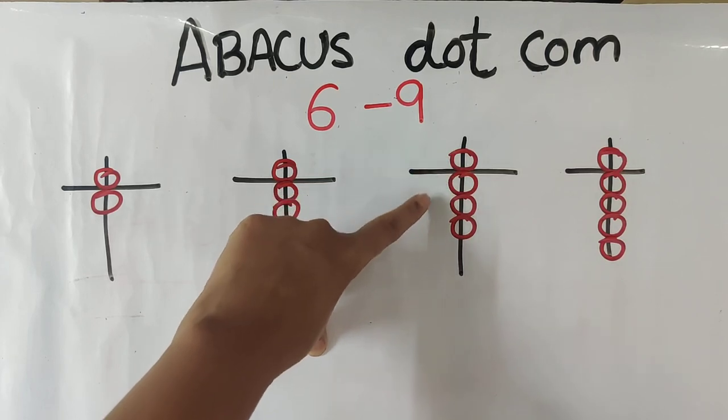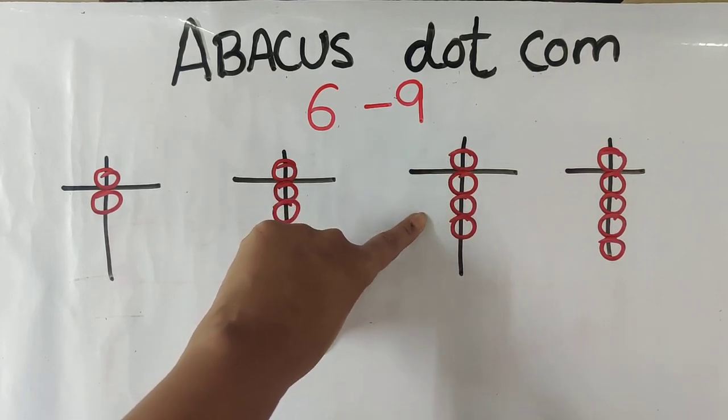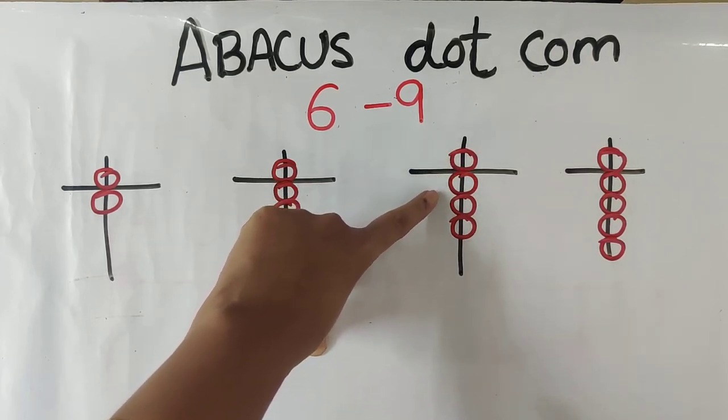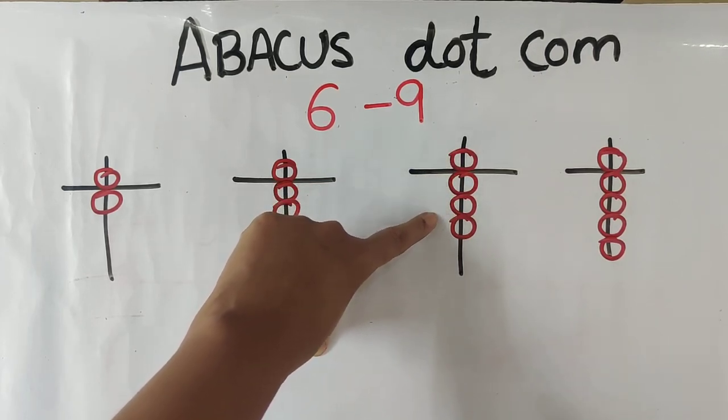Now, this is 5 and 3 — 8. So, 5, 6, 7, 8.